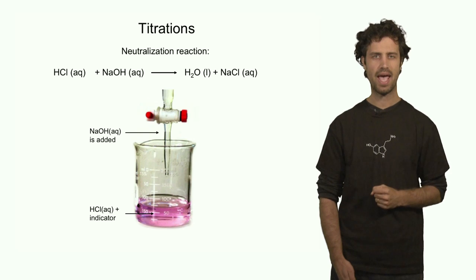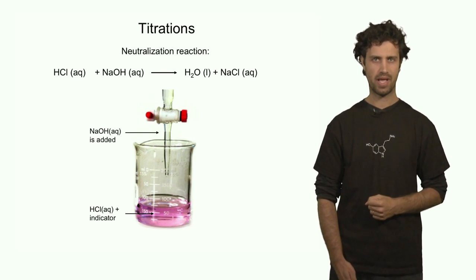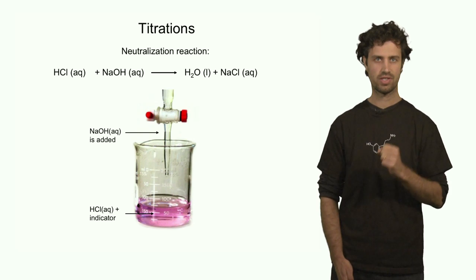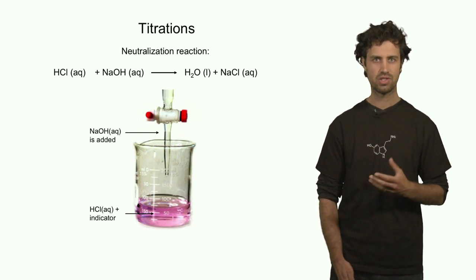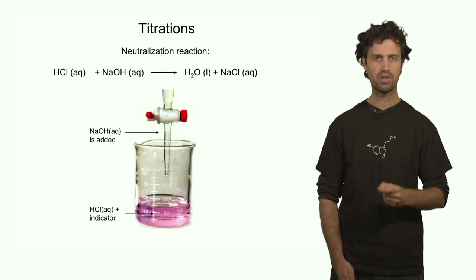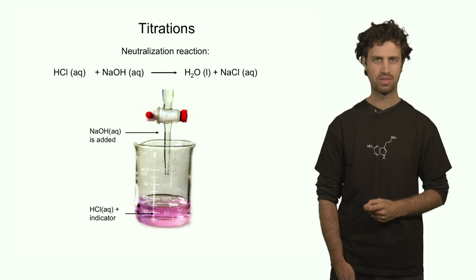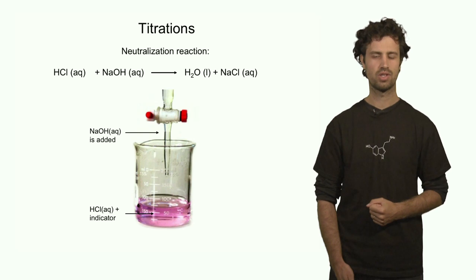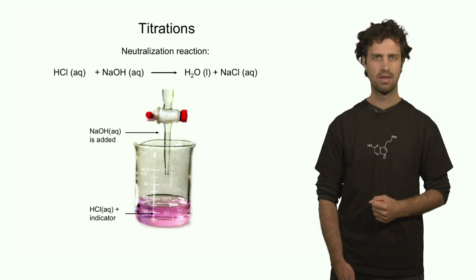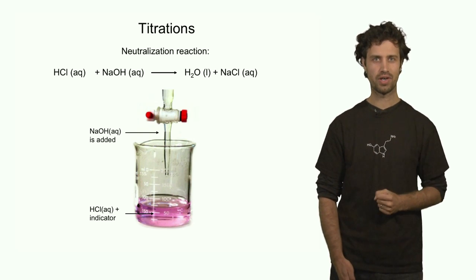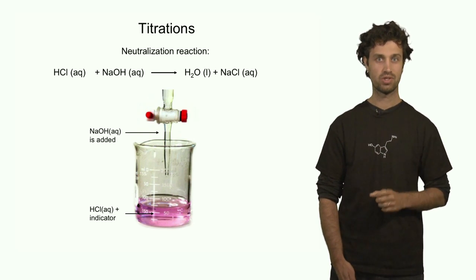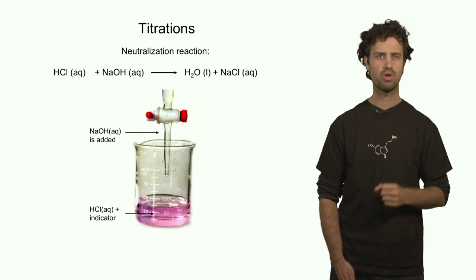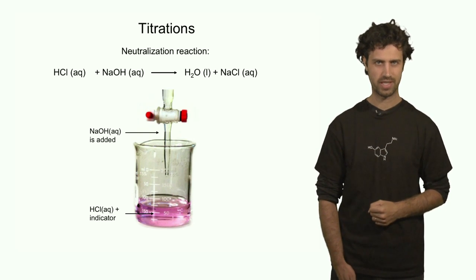So the more OH⁻ we add, the fewer protons we have in solution. In the neutralization reaction, we are going to add enough of the base such that all the protons will be converted into water molecules, effectively neutralizing the solution. During this process we can look at the color of the solution, which reports how many protons are left. So the color change will tell us how close we are to the neutralization point.